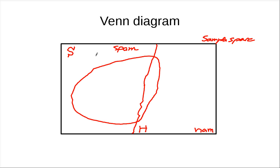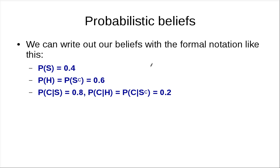So if you're in the spam part, the probability that you would contain the word cheap is around 80%. We can write this with probability notation: the probability of event S is 0.4, probability of event H is 0.6, and given that you are a spam email, you will contain the word cheap with probability 0.8. If you are ham, you'll have the word cheap with probability only 0.2.